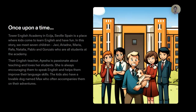Once upon a time, Tower English Academy in Ezequiel, Spain is a place where kids come to learn English and have fun. In this story, we meet seven children — Javi, Ariadne, Maria, Rafa, Natalia, Pablo, and Gonzalo — who are all students at the Academy. Their English teacher Aisha is passionate about teaching and loves her students, always encouraging them to speak English. The kids also have a lovable dog named Max, who often accompanies them on their adventures.